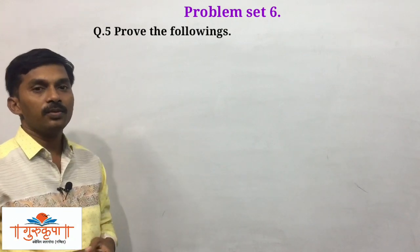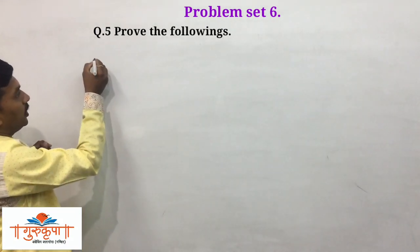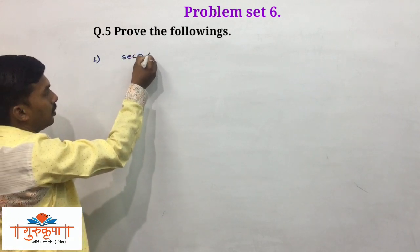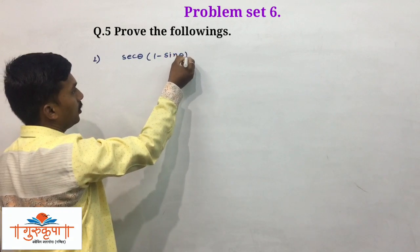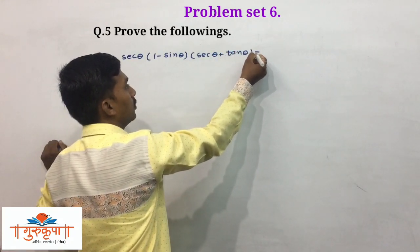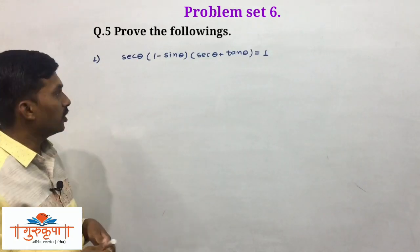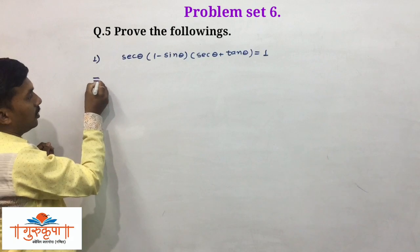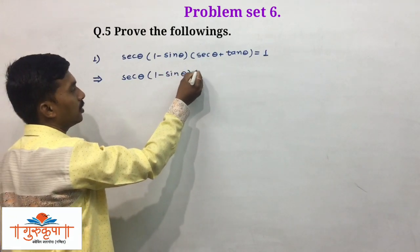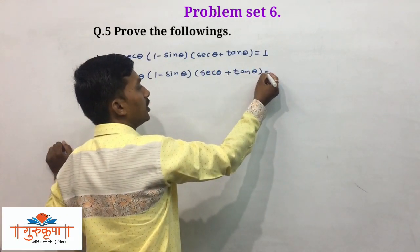Problem set 6, question number 5. The question is to prove the following. The first example is: prove that sec theta into the bracket (1 minus sin theta) into (sec theta plus tan theta) equals 1. We have to prove that LHS and RHS are equal. First, we will write LHS as it is: sec theta into (1 minus sin theta) into (sec theta plus tan theta), and we have to simplify this LHS to get RHS.